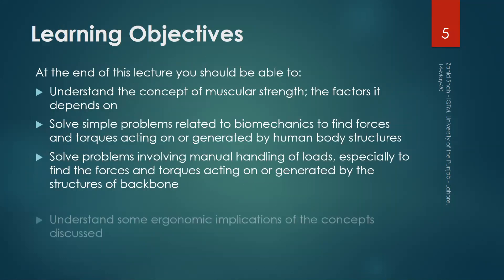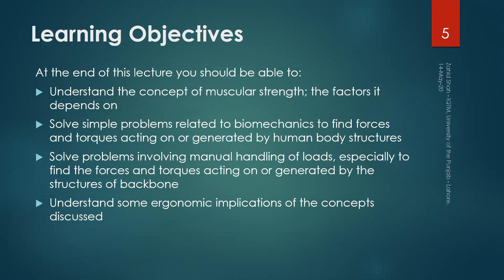The learning objectives of this lecture are to understand the concept of muscular strength and the factors it depends on. Then we will solve some simple problems related to biomechanics to find forces and torques acting on or generated by human body structures, especially muscles and joints, including problems involving manual handling of loads to find forces acting on the backbone. Finally, we will discuss some ergonomic implications of the concepts discussed.